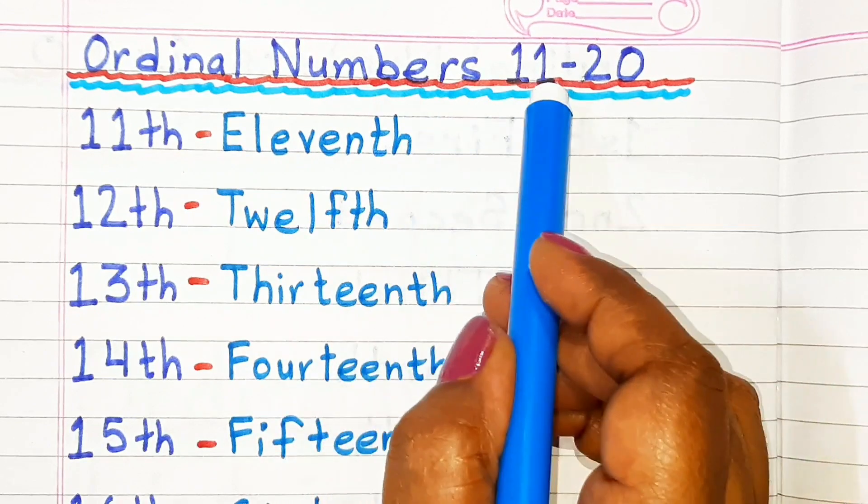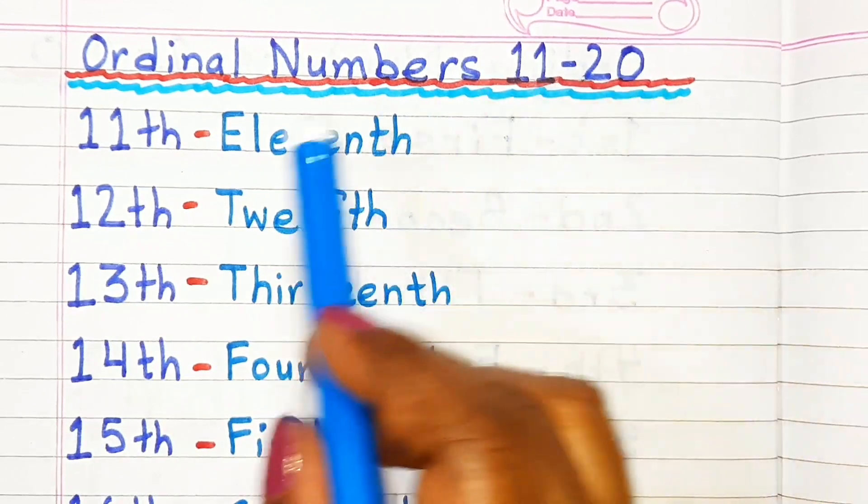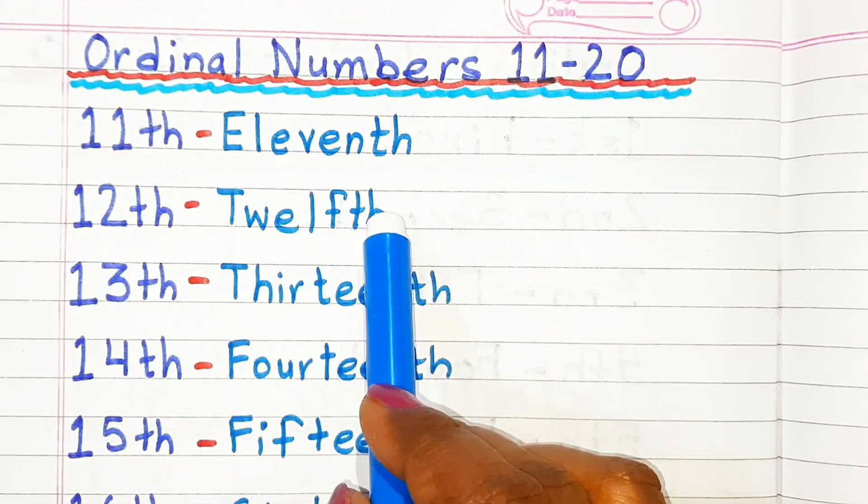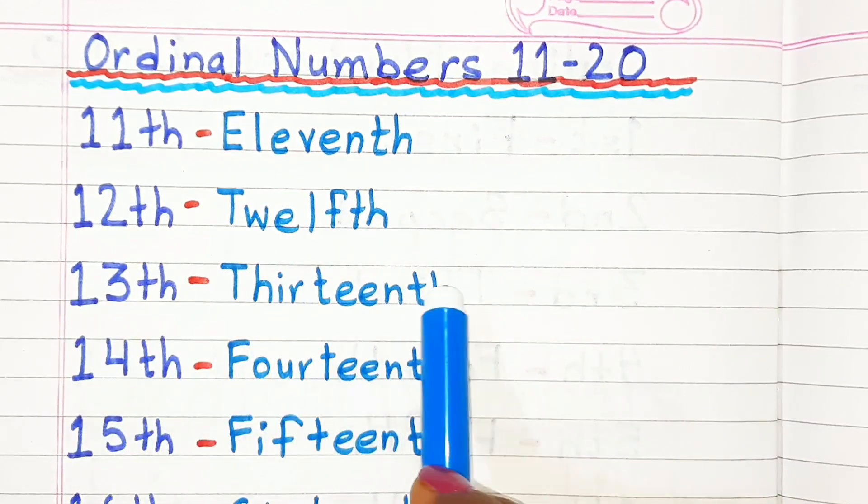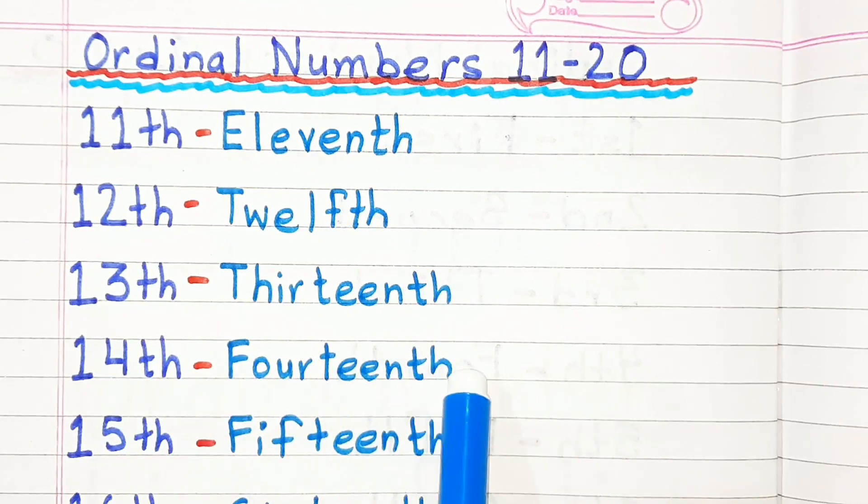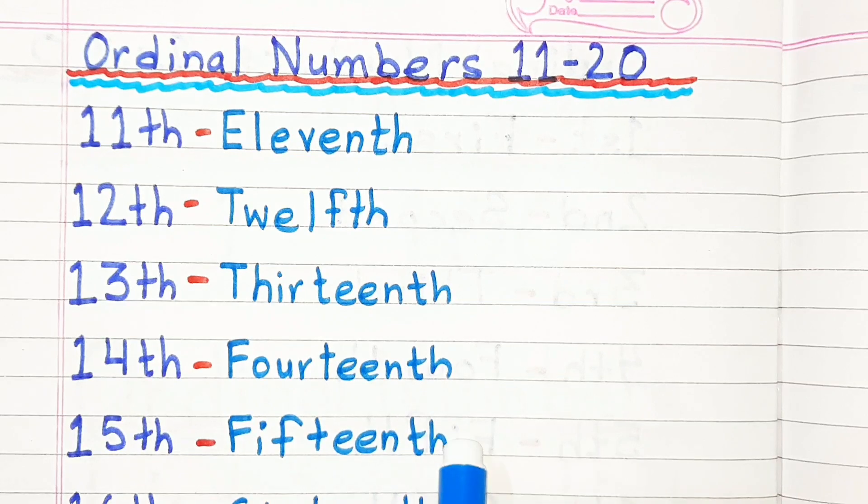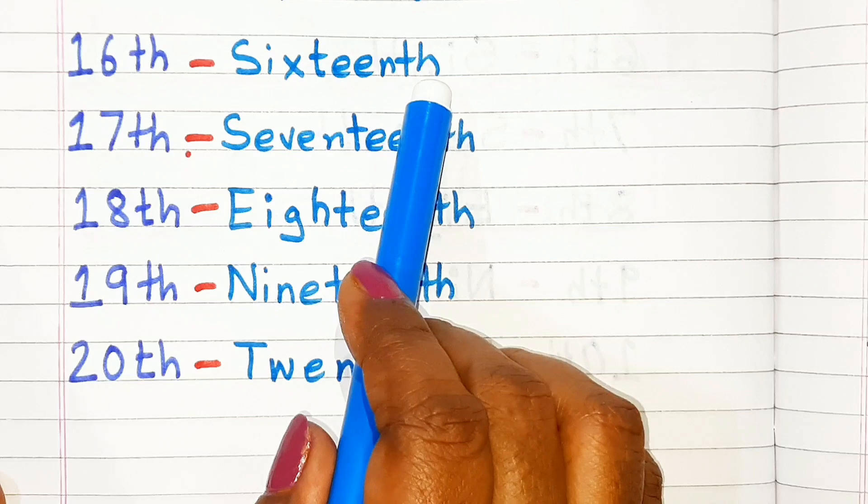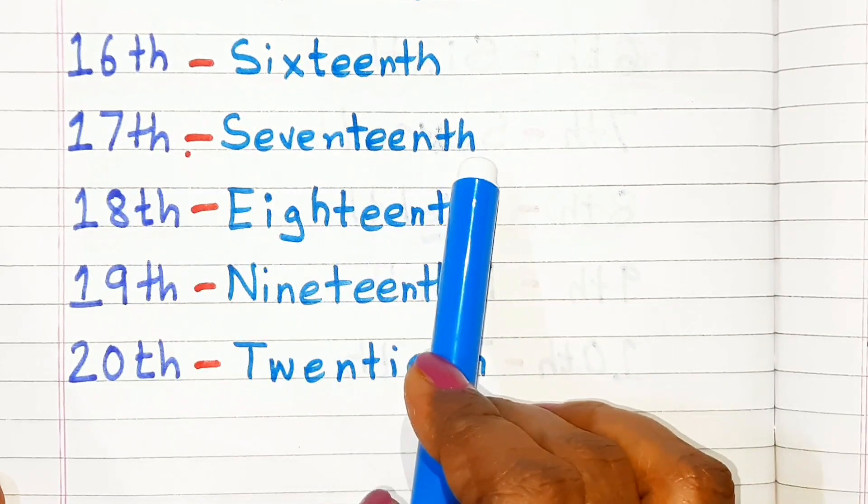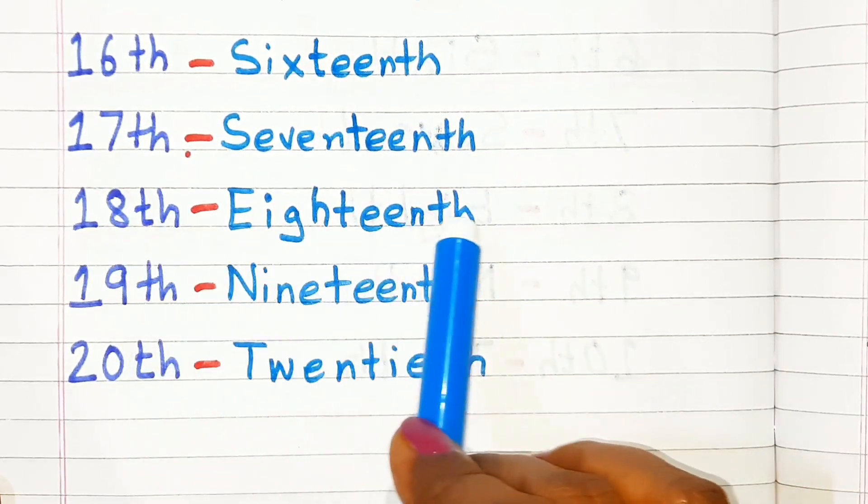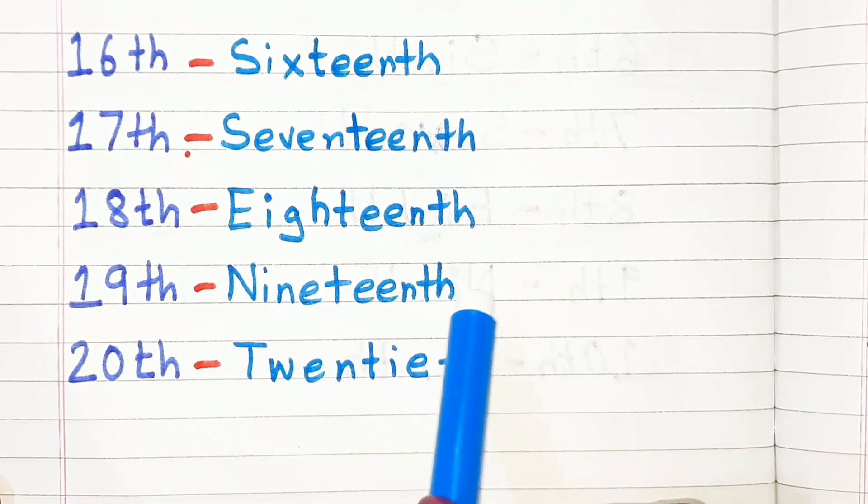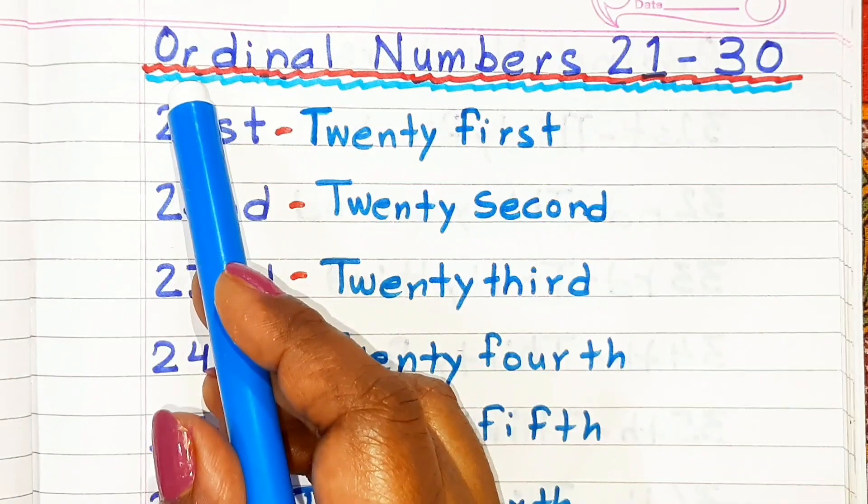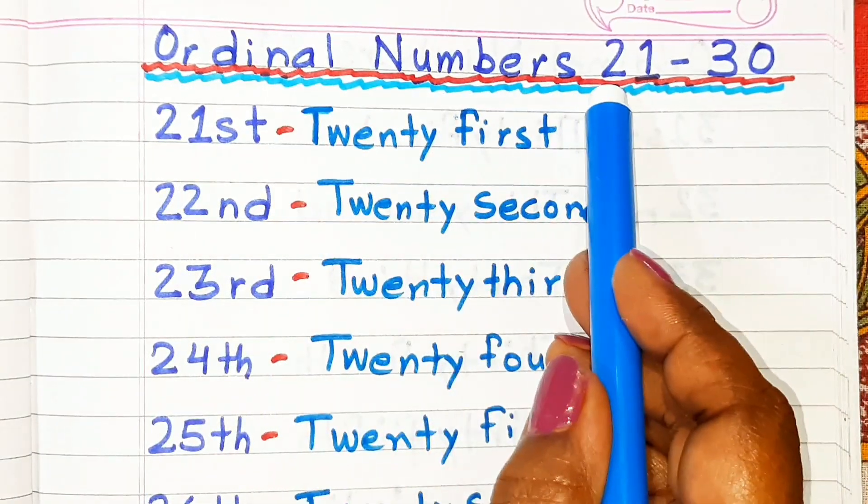Ordinal Numbers 11 to 20: 11th, 12th, 13th, 14th, 15th, 16th, 17th, 18th, 19th, 20th.